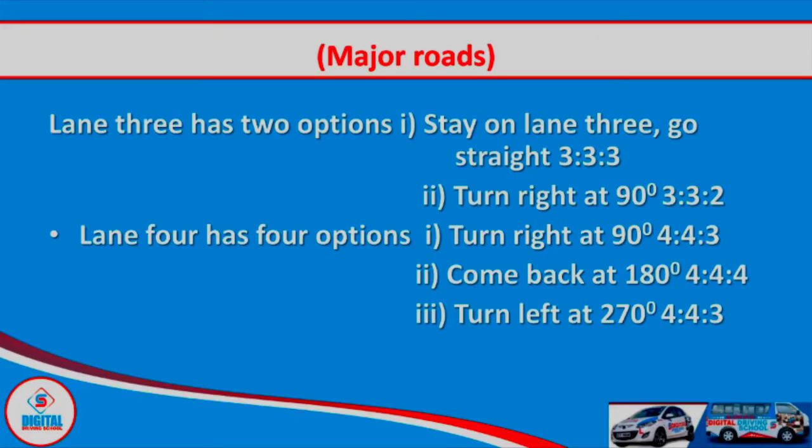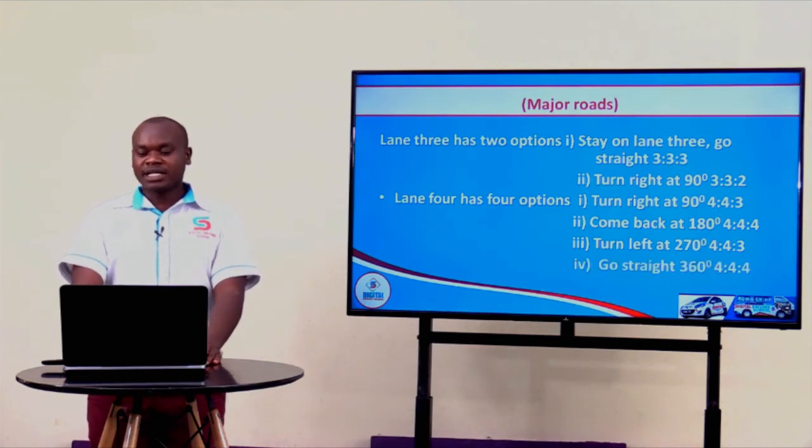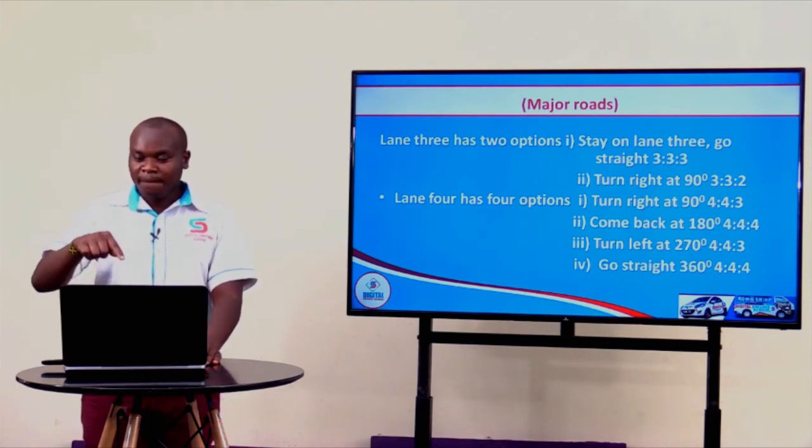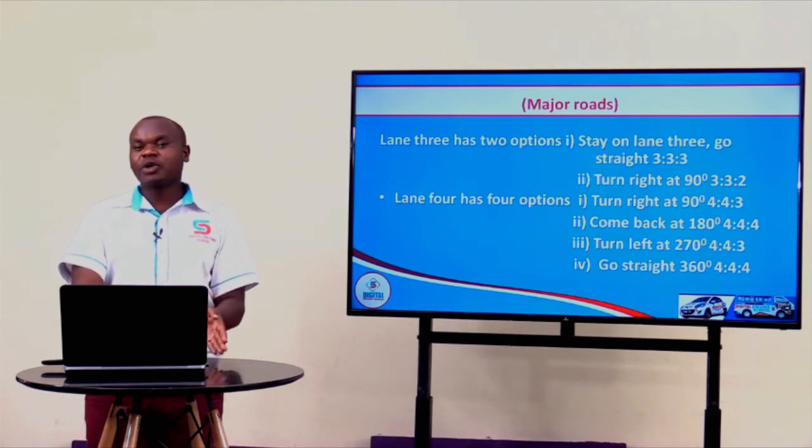The third option of lane four is to turn to your left at 270 degrees — we are in a major road, a four-lane road, and you are going to exit to a minor road, hence we less one. The fourth option: vehicles that want to go straight in lane four are supposed to make a complete circle and exit using lane four, meaning you are in a major road and exit to a major road.